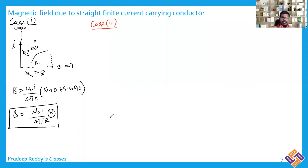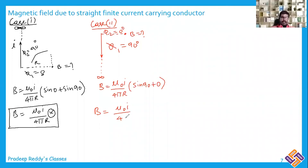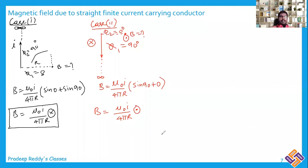Case 2: The wire is extended to infinity in the downward direction, and you are calculating the magnetic field at a point beside the top end. Here φ₁ = 90° and φ₂ = 0°. Using B = (μ₀i / 4πR)(sin90° + sin0°) = μ₀i / 4πR. Using the right-hand rule, the magnetic field on one side is into the plane and on the other side is out of the plane.